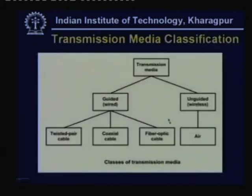There are two basic categories: guided (which we may call wired) — including twisted pair cable, coaxial cable, and optical fiber — and unguided (wireless). Unguided communication typically occurs through air, though it can also be water or free space. Primarily we are concerned with air since most of our data communication takes place through air.